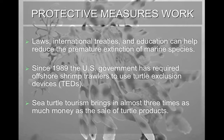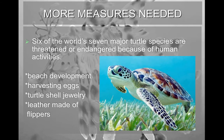Economics is everything. Once we can demonstrate to populations that sea turtle tourism brings in three times as much money as the sale of turtle products, people will generally stop killing turtles if they can bring in more money. We can only make these ecological impacts if we're able to show they have an economic benefit as well. Unfortunately, six of the seven turtle species are threatened because of human activities, including beach development, egg harvesting, and products like turtle shell combs and leather made from flipper skin still sold in certain countries.